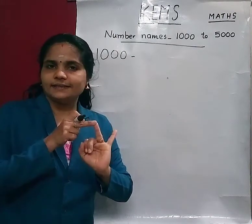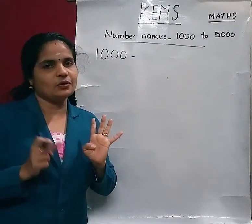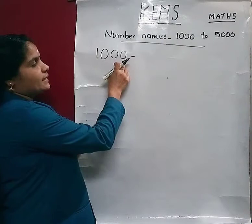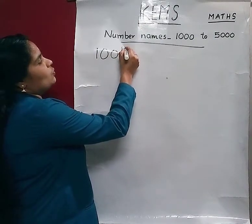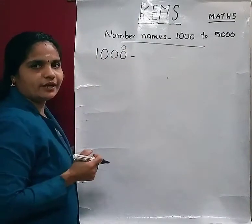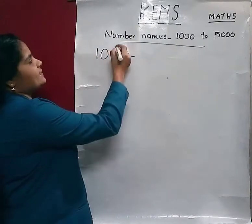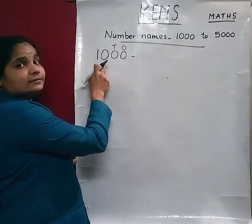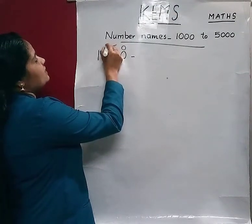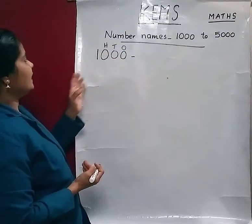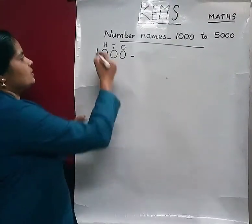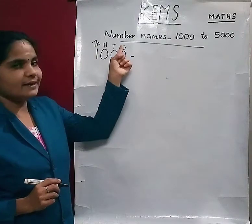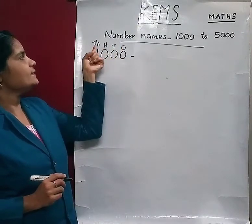The place values are: ones, tens, hundreds, thousands. So children, listen. The last place is ones — O stands for ones. The next place is tens — T stands for tens. Then here, hundreds — H stands for hundreds. Then here, thousands — TH stands for thousands. So: ones place, tens place, hundreds place, thousands place.